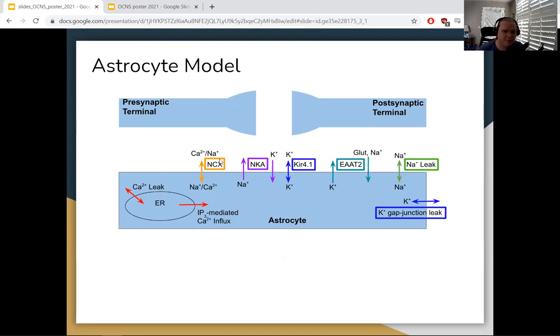We present a model of the astrocyte that includes biologically constrained key transmembrane fluxes. Each of these components is carefully adapted from the literature to match the available data.